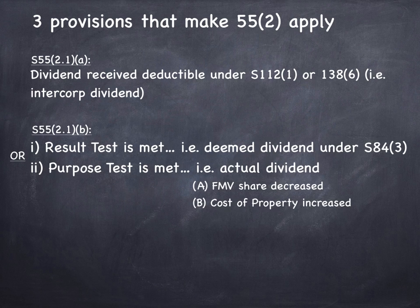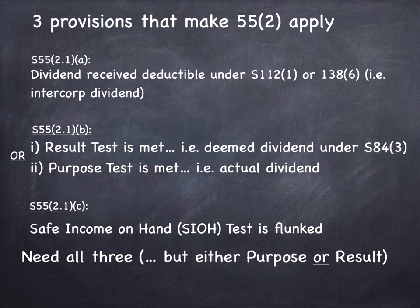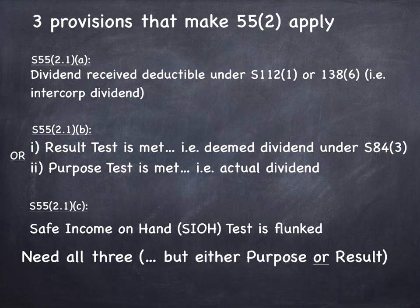The other provision that can make 55.2 apply: one says if the result test is met — result tests come from deemed dividends under Section 84.3 — or if the purpose test is met on an actual dividend. And we're going to get into what exactly the purpose test is. And then the other thing that can put you in the 55.2 net is if you flunk the safe income on hand test. Because safe income is an important concept in 55.2 considerations. If you don't have that safe income and you flunk that test, you can fall into 55.2 and the negative consequences are going to apply. You need all three — but either purpose or result; you don't need both of those. It's got to be deductible under Section 112, either the result test or the purpose test must be met, and you have to flunk the safe income on hand test. If all three are there, you fall into the 55.2 net and your dividend is going to be converted into a capital gain.